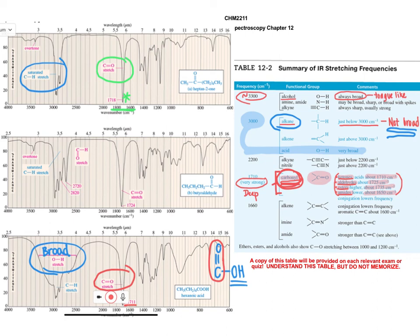Likewise, in butyraldehyde, that's our four carbon aldehyde molecule shown here, you also see that very strong prominent signal. In this case, it's 1724, which corresponds very nicely to the expected aldehyde signal at 1725 approximately in the summary of stretching regions.